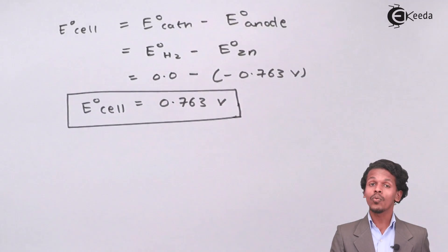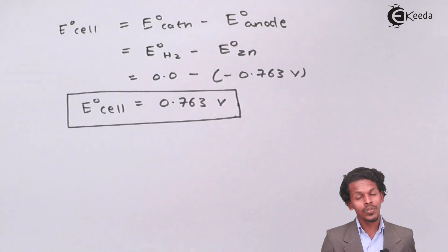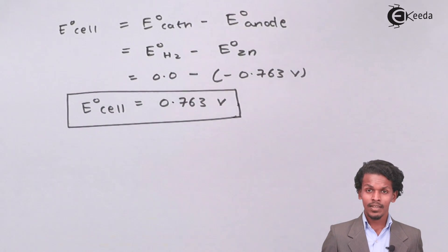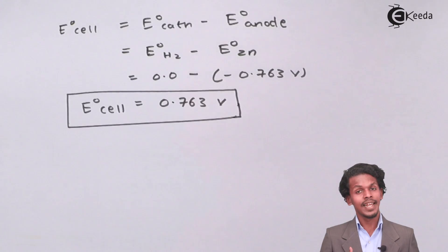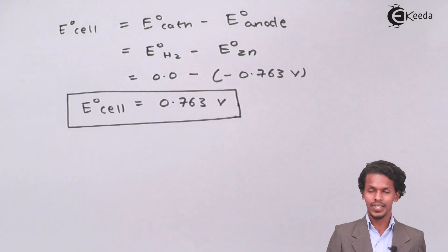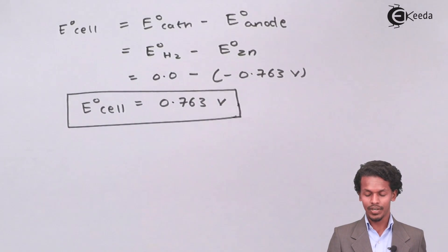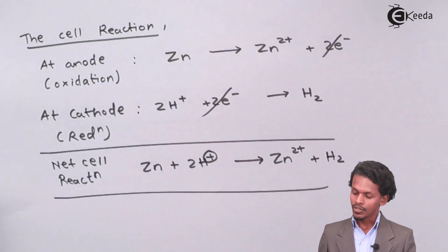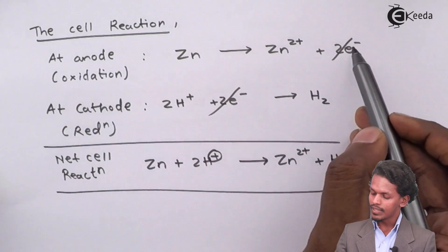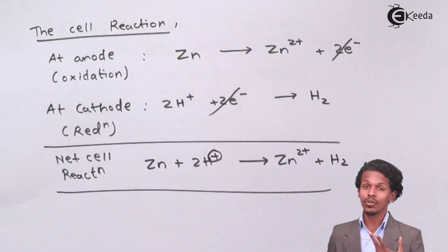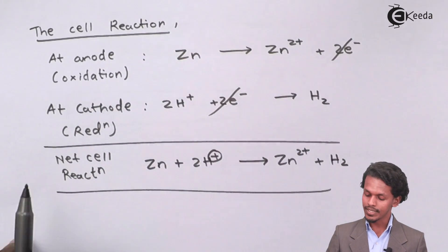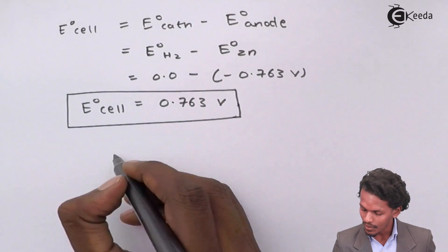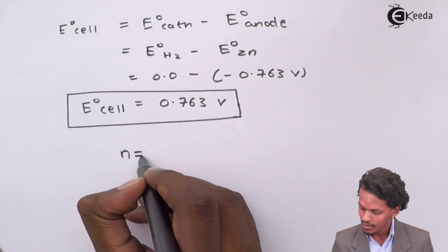Now let us calculate the number of moles of electrons involved in the half-cell reaction. The number of electrons involved is 2, so n = 2.